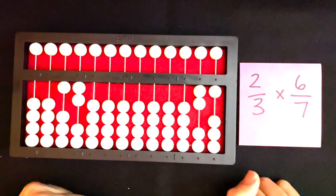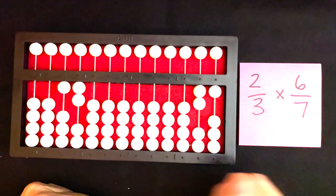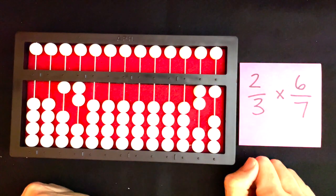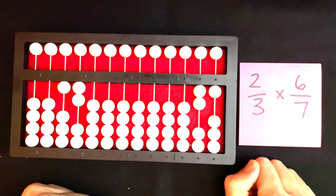Now I can read my answer, which is twelve over twenty-one. That's how I do a multiplication problem on my abacus using the method from Abacus Made Easy by Davidow.